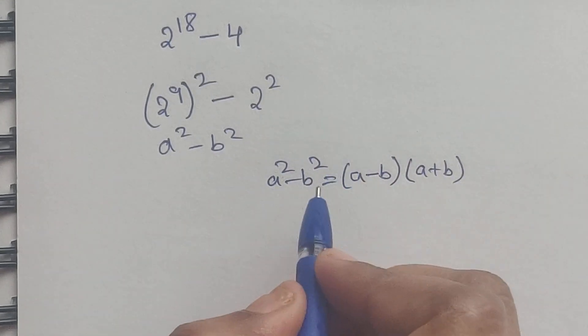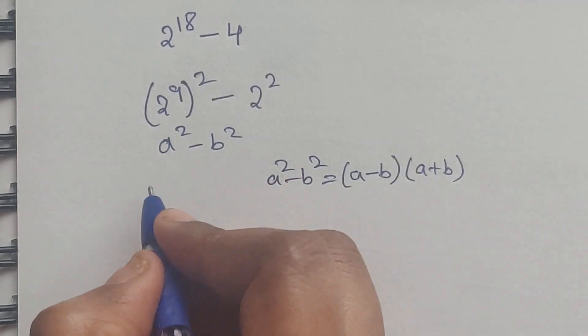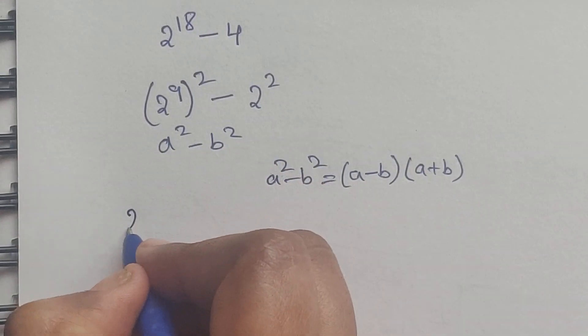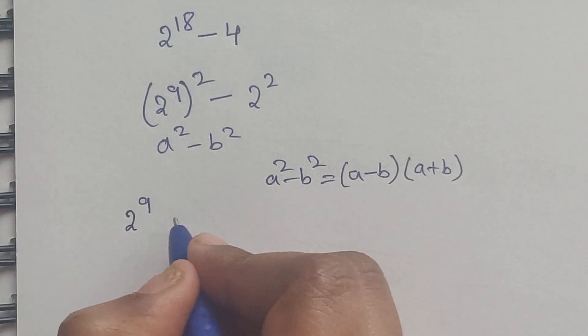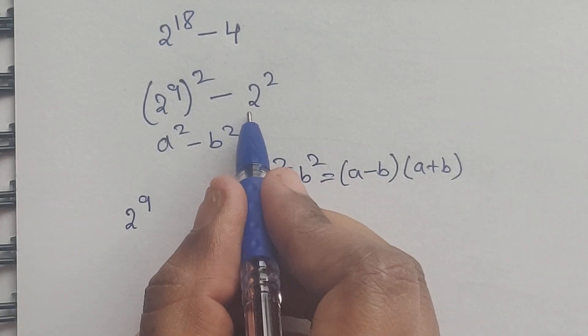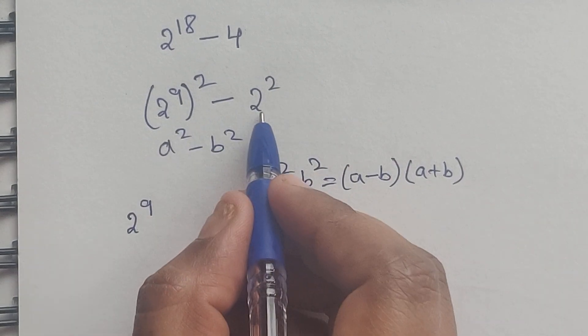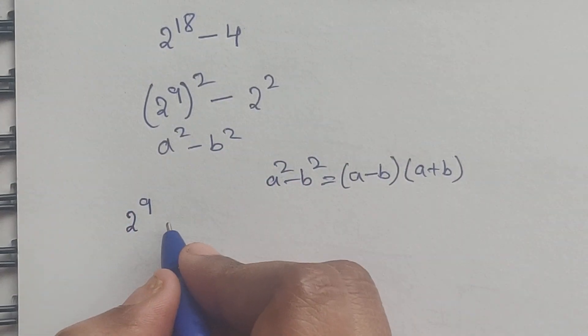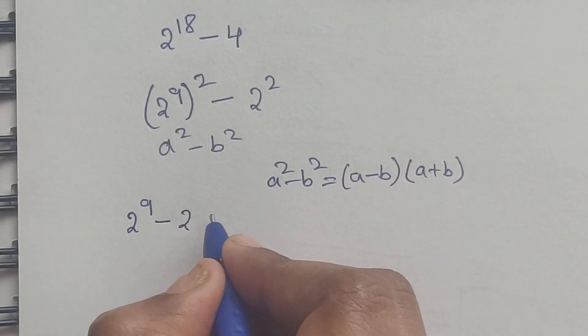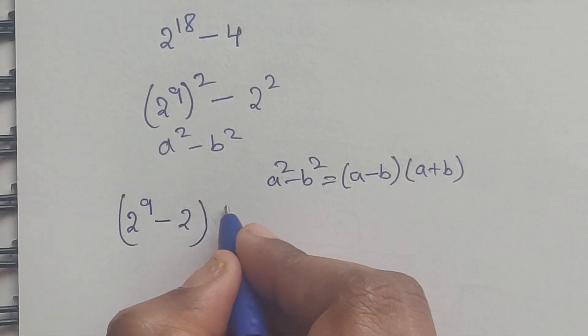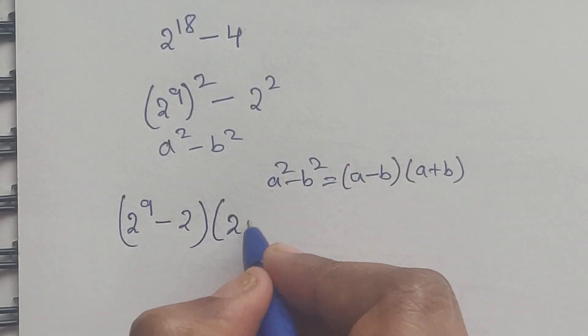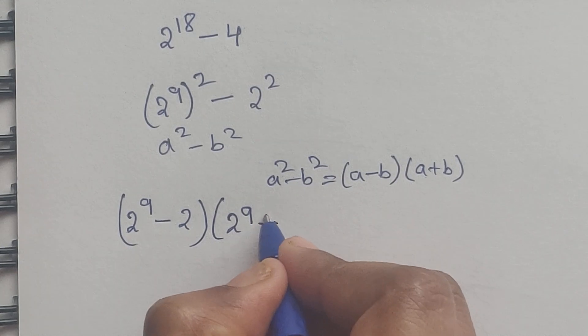So I'm going to use this formula. We can write it like this: where a is 2^9 and b is 2. So it becomes (2^9 - 2) times (2^9 + 2).